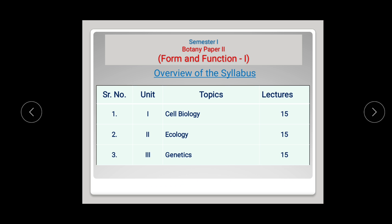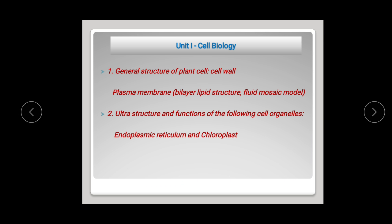In Botany Paper 2 you will have three units. Unit 1 is based on the topic Cell Biology, having a weightage of 15 lectures. Unit 2 is based on the topic Ecology, and Unit 3 is based on the topic Genetics. Each unit will have 15 lectures, making a total of 45 lectures for the theory paper.